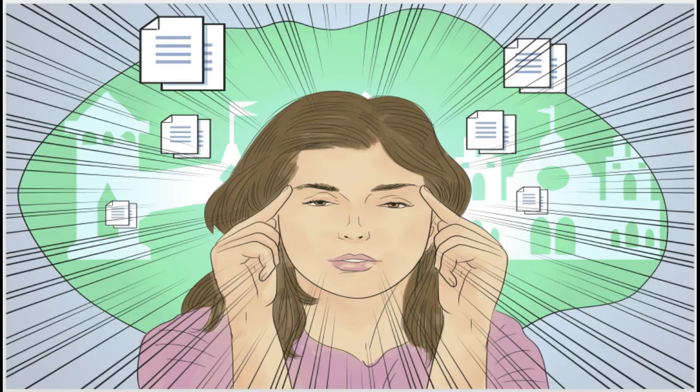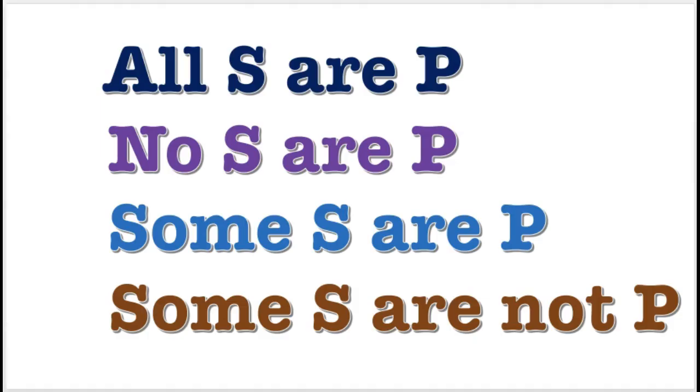Prepare to memorize. Now, here are the four kinds of standard form categorical propositions. First, memorize the order that they are in.